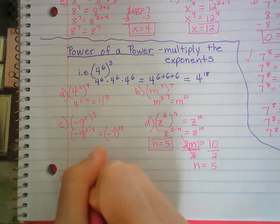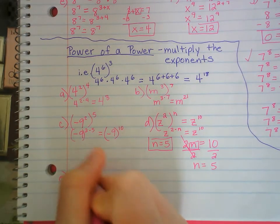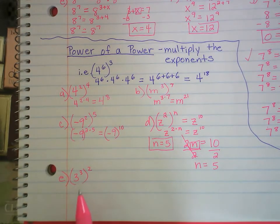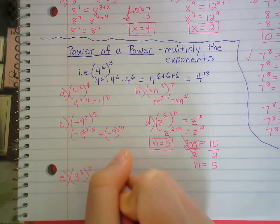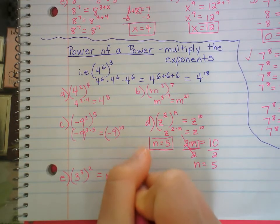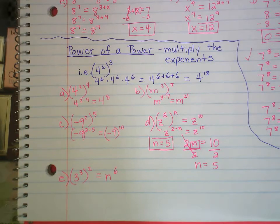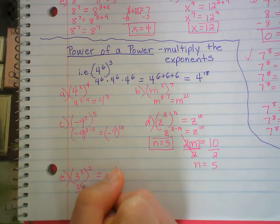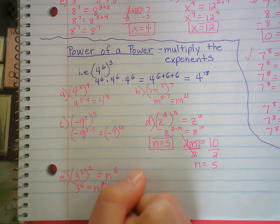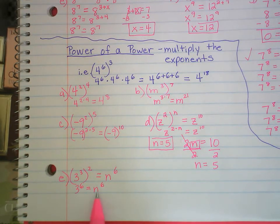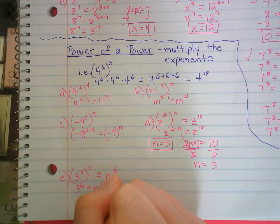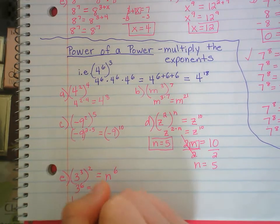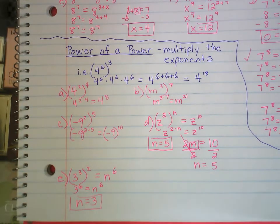Example E: 3 cubed to the 2nd power equals n to the 6th. This is the power of a power, so that's 3 to the 3 times 2, which is 3 to the 6th, equals n to the 6th. Well, 3 to the 6th equals what to the 6th? 3, obviously. So n is just the base — n is just 3, because 3 to the 6th equals 3 to the 6th.